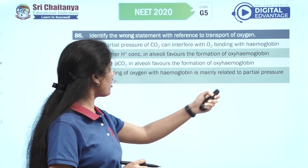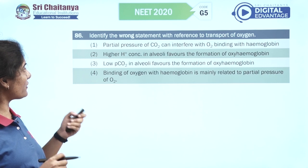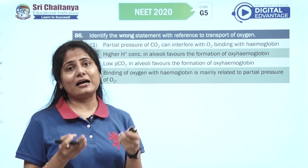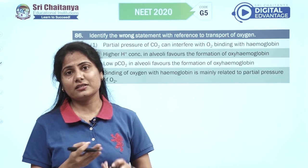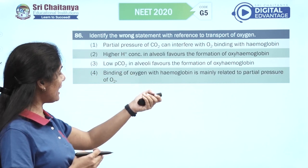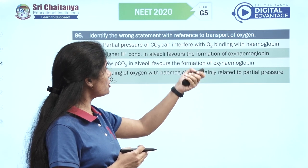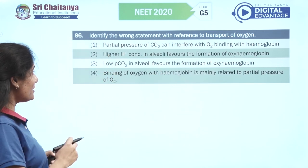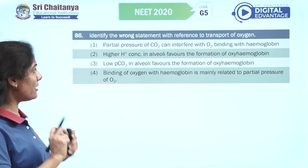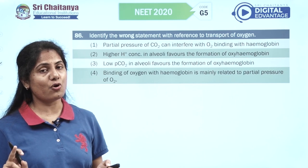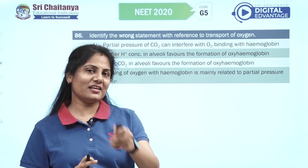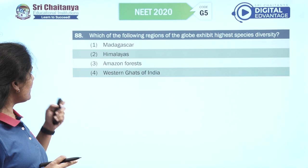Identify the wrong statement with reference to transport of oxygen. Partial pressure of carbon dioxide can interfere with oxygen binding to hemoglobin — correct. Higher hydrogen ion concentration in alveoli favors formation of oxyhemoglobin — this is wrong: higher H⁺ concentration means lower pH, which does not favor oxyhemoglobin formation. So the second option is the right answer.